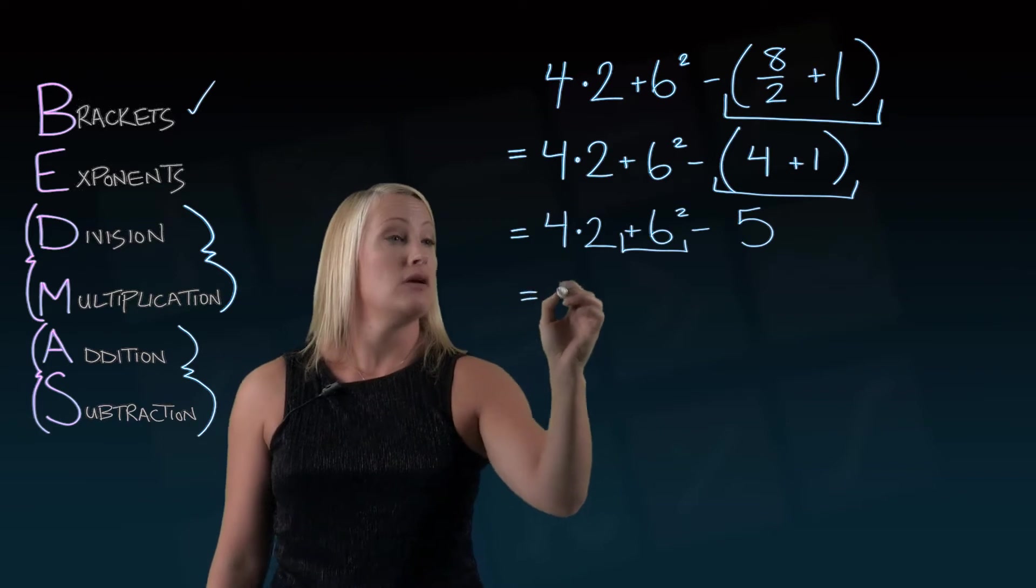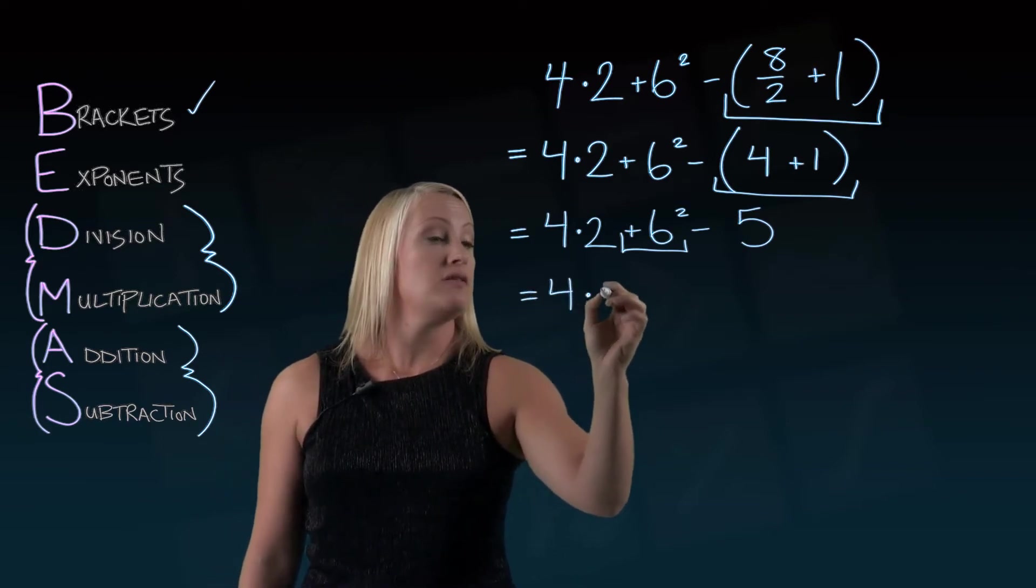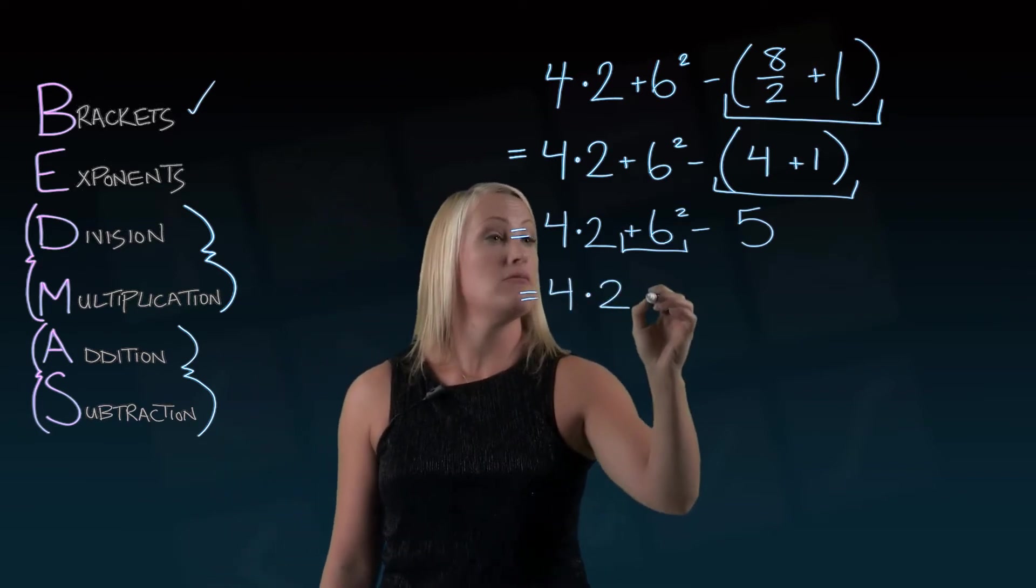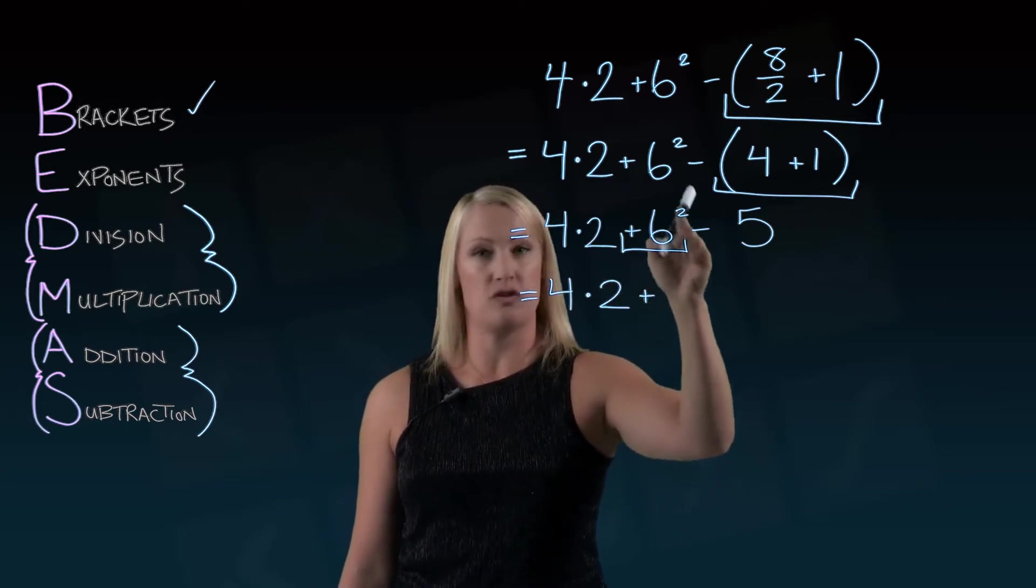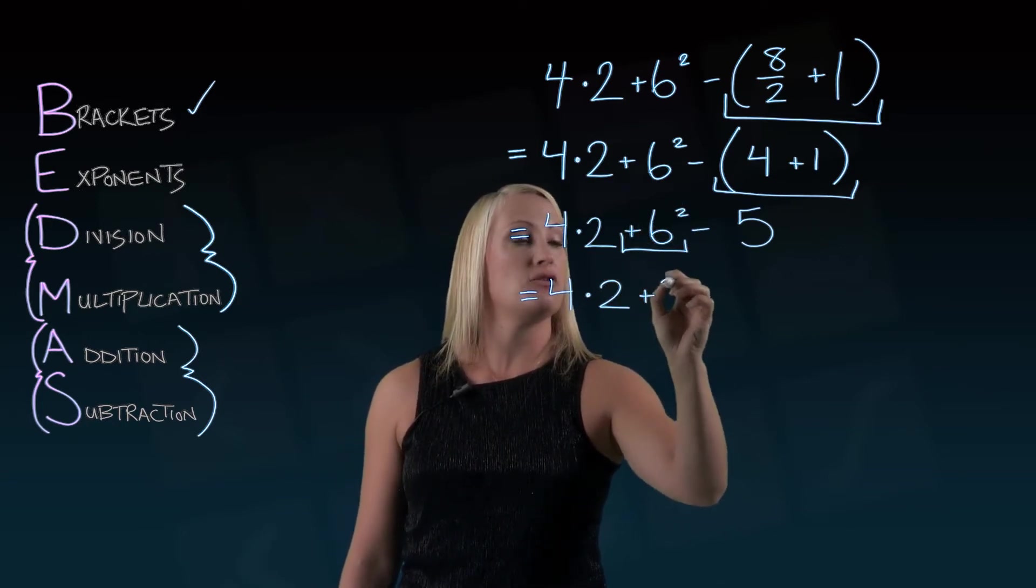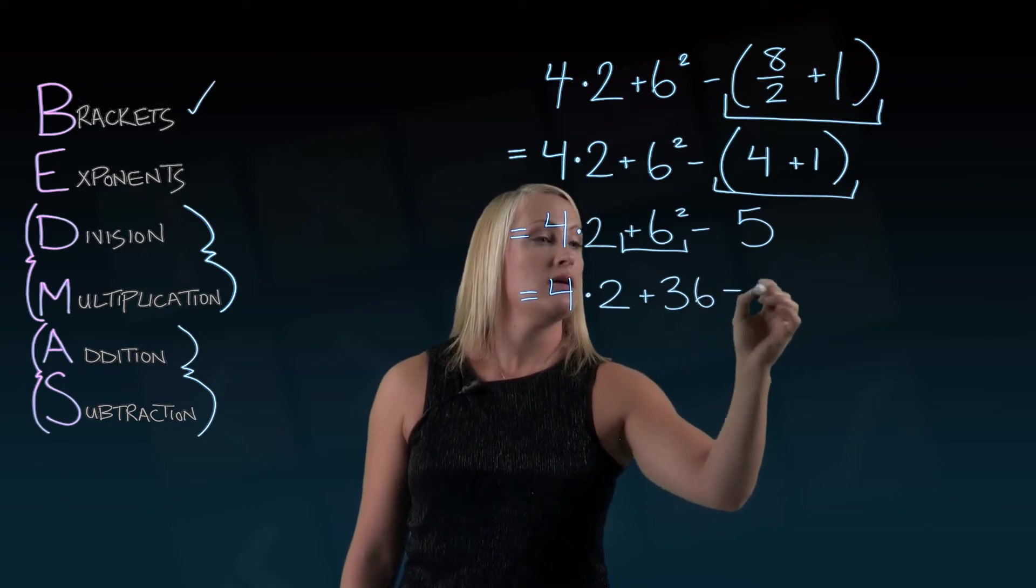I'm going to leave everything else alone. So 4 times 2 will stay the same. 6 squared. That positive sign is going to stay there. I'm just squaring the 6. And 6 squared is 36. Subtract 5.